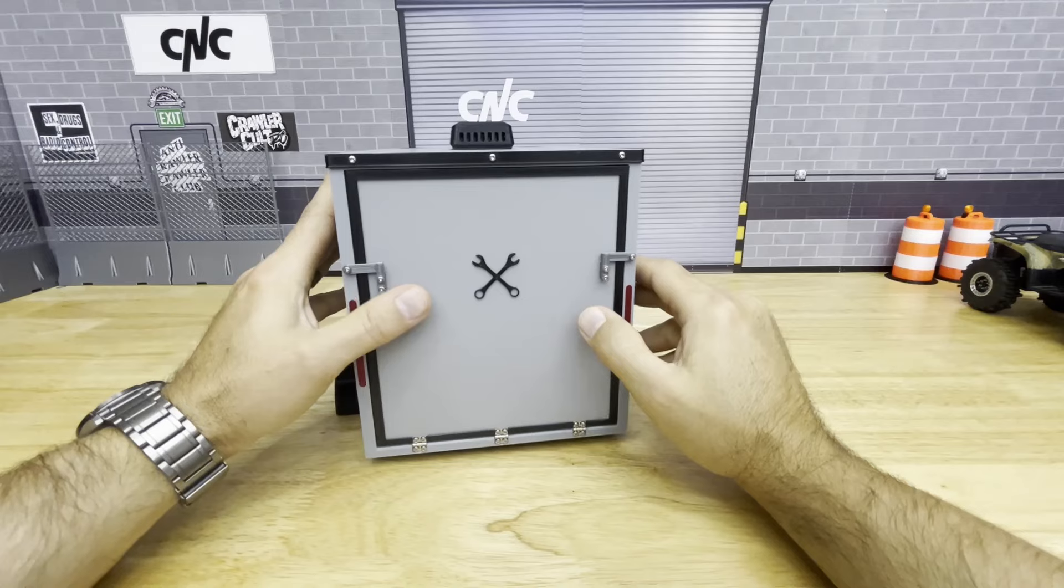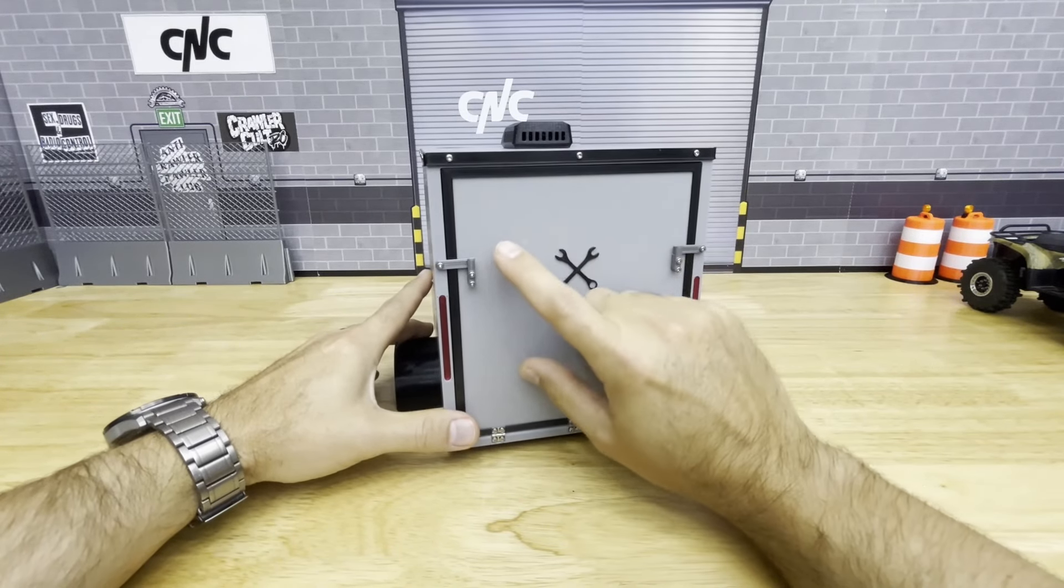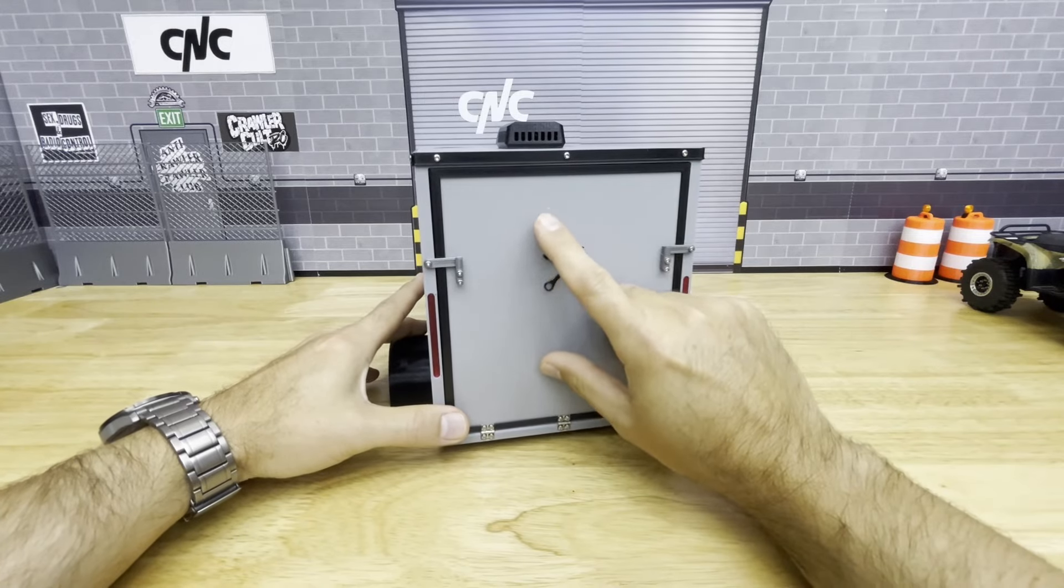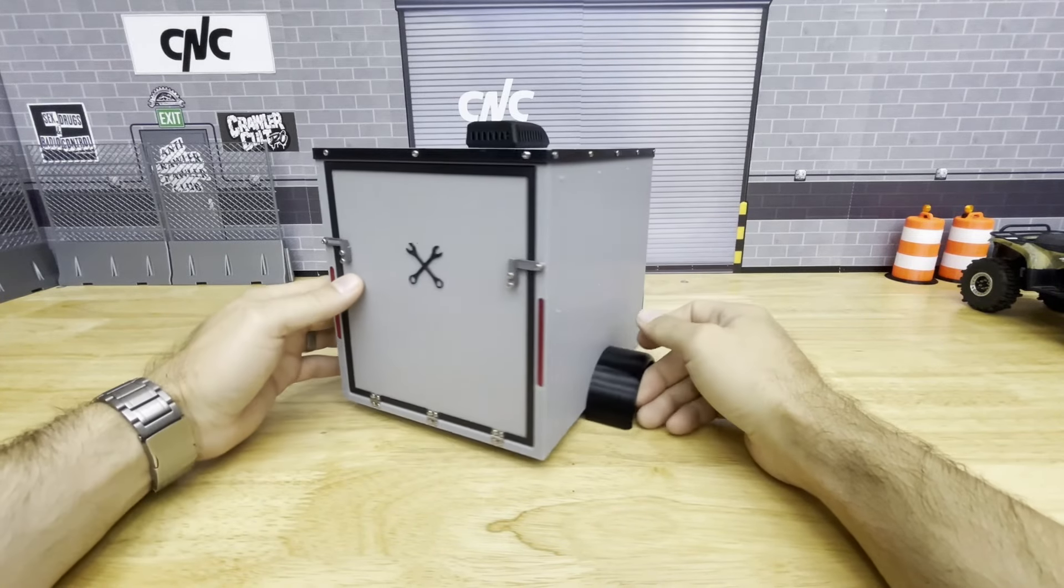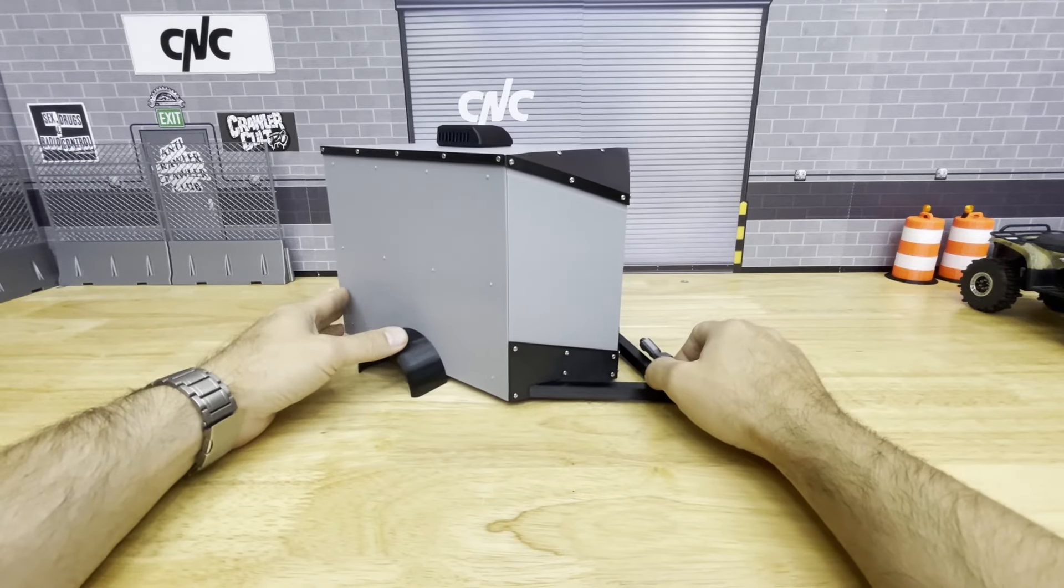For our fully assembled trailers, we're going to be offering custom graphics back there. Reach out to us if you've got a hobby shop or a club and you want your graphics on the back of the trailer. We can work that out with you. That's the gray and black trailer looking modern and sleek.